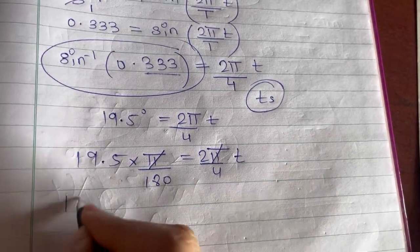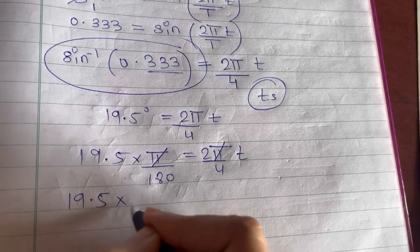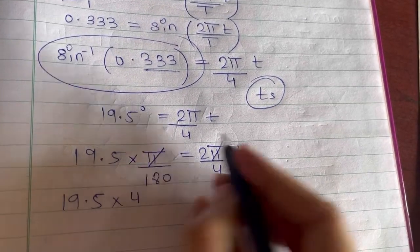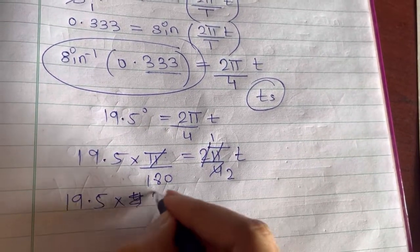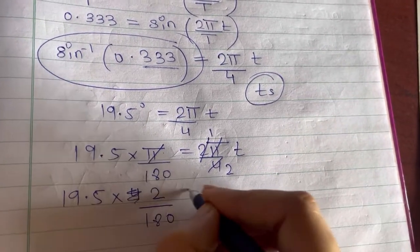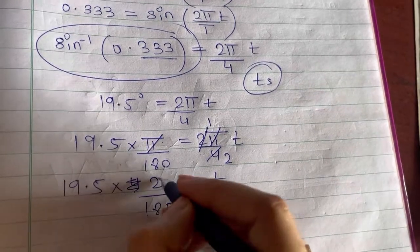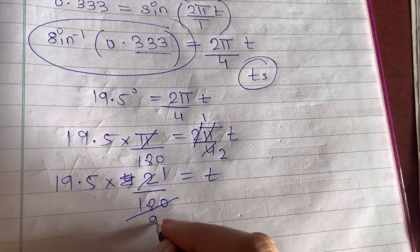Take this 4 over here. So this becomes 19.5 into 4. Okay, you can also do it like this. So take this 2 over here upon 180, which is equal to t. 2 1s are 2, 9s are 18, 2 0s are 0.